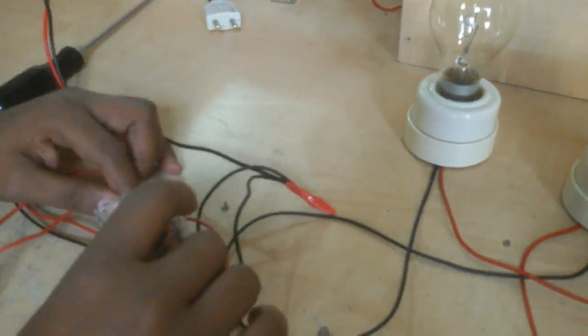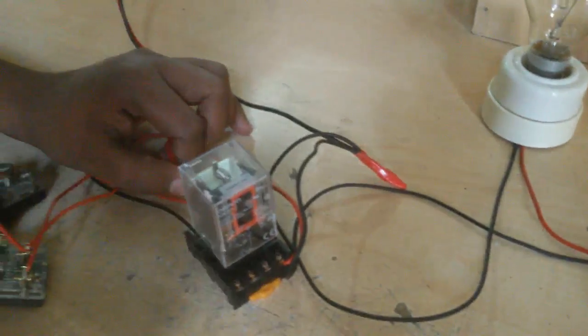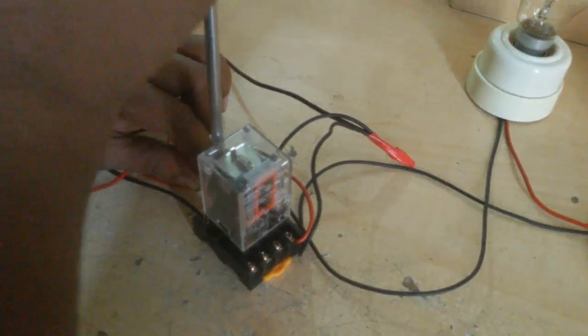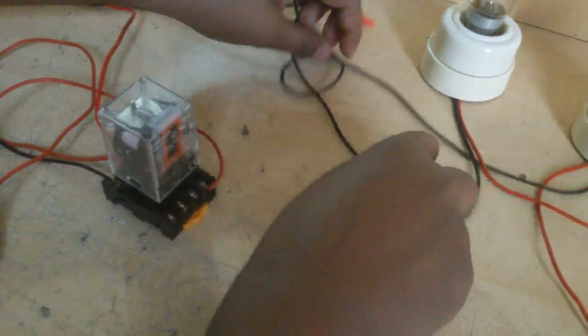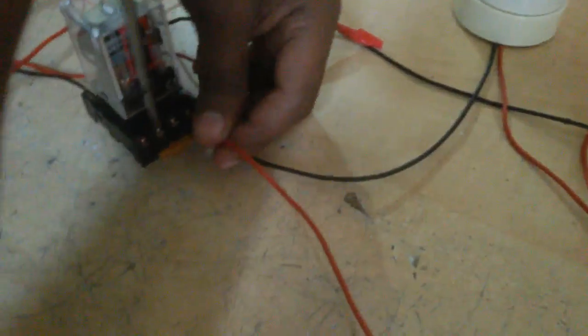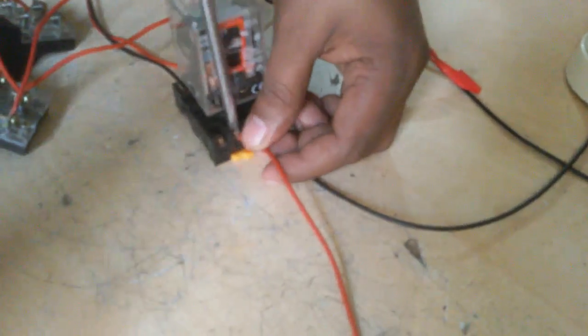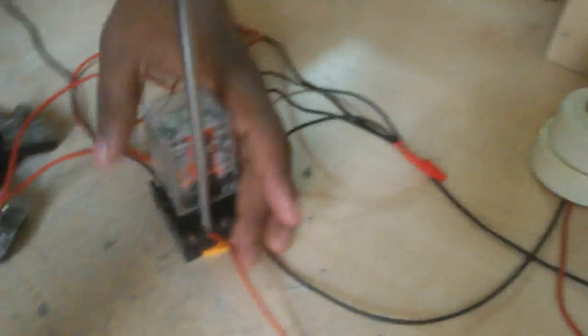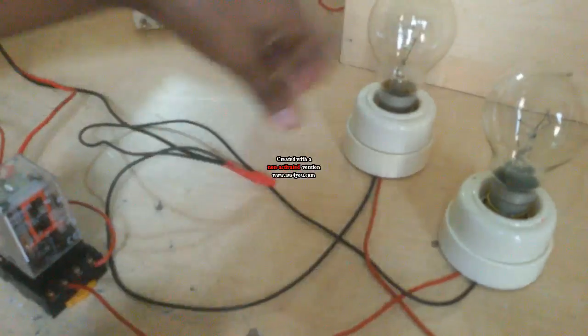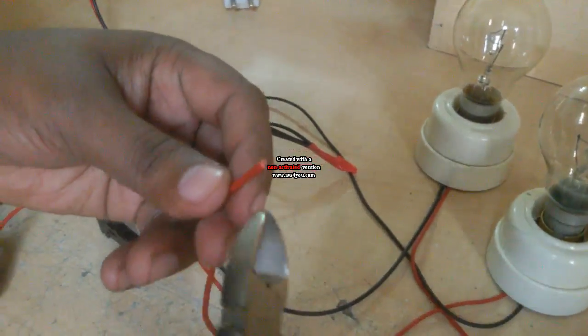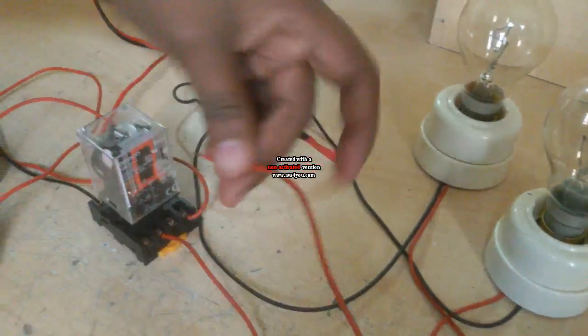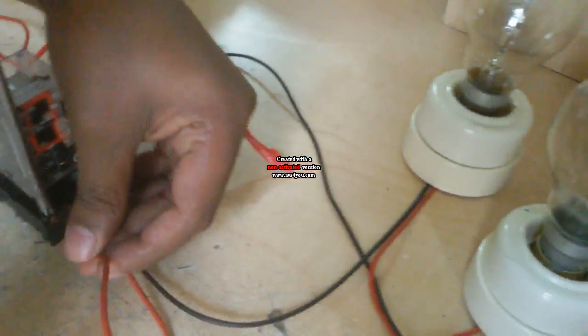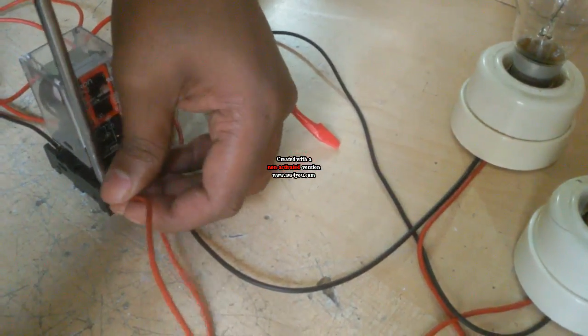Now this phase line is connected one NC terminal. Relay one NC terminal, this one NC terminal is in 4 number terminal and 3 number terminal. Now I connect our load. This load is connected this 4 number terminal. When this relay is off, then this light is on. When this relay is on, then this light is on.